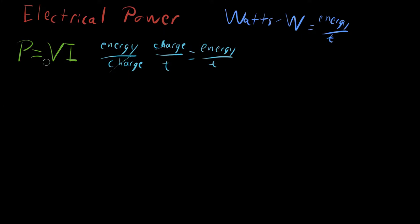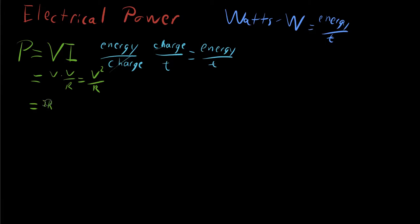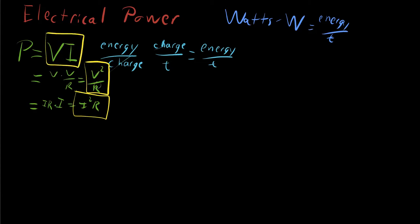Because we have Ohm's law, this has multiple forms. If you substitute V/R for I, you get V times V over R, which equals V²/R. Substituting the other way — replacing V with IR — you get IR times I, which equals I²R. These are the three equations for power: P = VI, P = V²/R, and P = I²R.